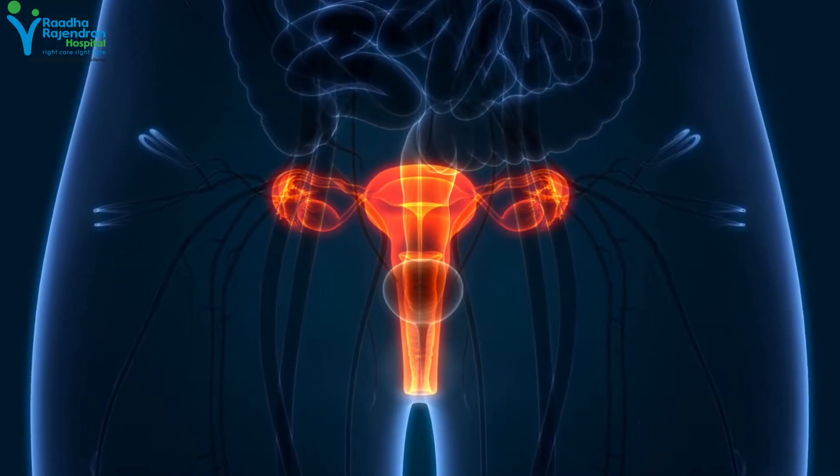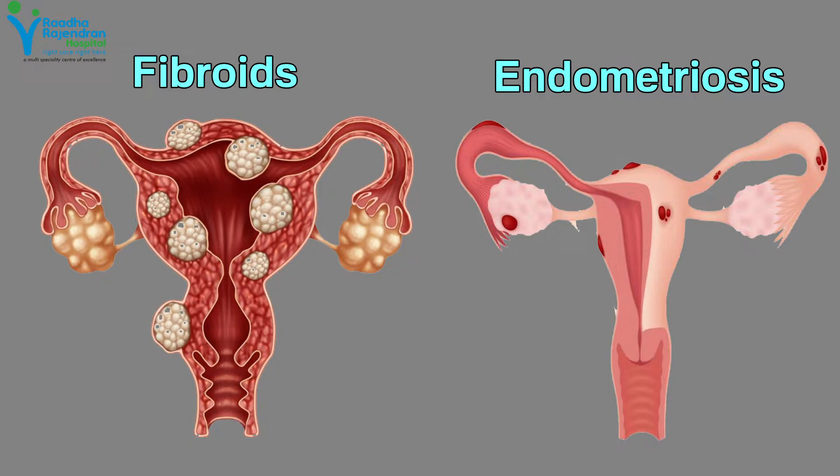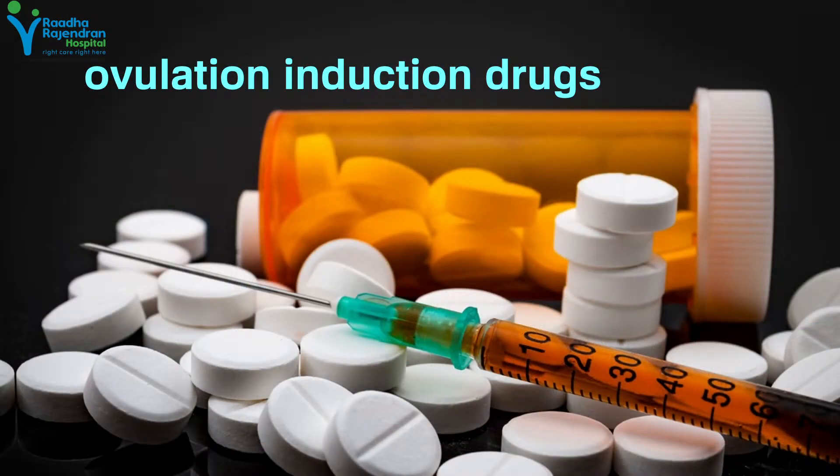In the baseline ultrasound, we check the uterus — looking for problems like fibroids, endometriosis, or cysts. After that, baseline ovulation induction drugs are prescribed, such as clomiphene or letrozole, or sometimes hormone injections. These are the commonly given ovulation induction drugs.